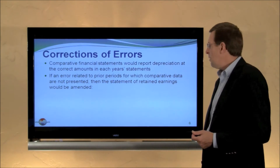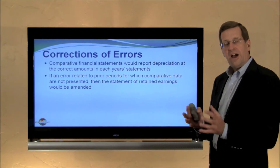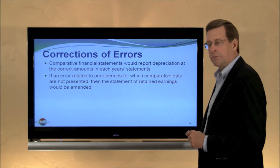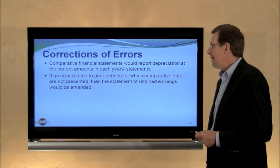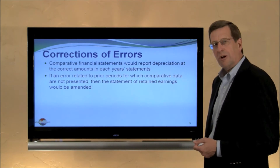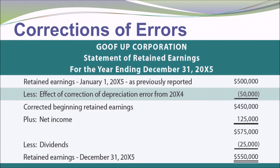Now, if we show comparative financial statements, we need to go back and change those. If we have income statements for 20x5 and 20x4, we need to show the correct amount of expense for each year — so what we do in the ledger may not be the same as what we show in the financial statements. If an error relates to periods prior to those for which comparative data are presented, we adjust the earliest retained earnings presented. For example, assuming we only show 20x5, I show retained earnings at January 1, 20x5 as previously reported, then subtract the effect of the correction of the error to arrive at the corrected beginning retained earnings. If I showed comparative income statements, both would need to reflect the correct depreciation amounts.